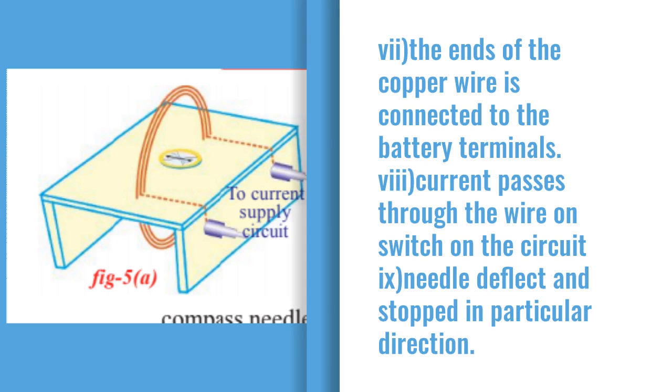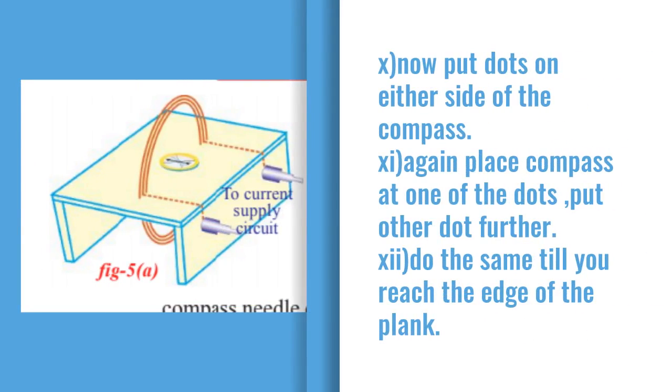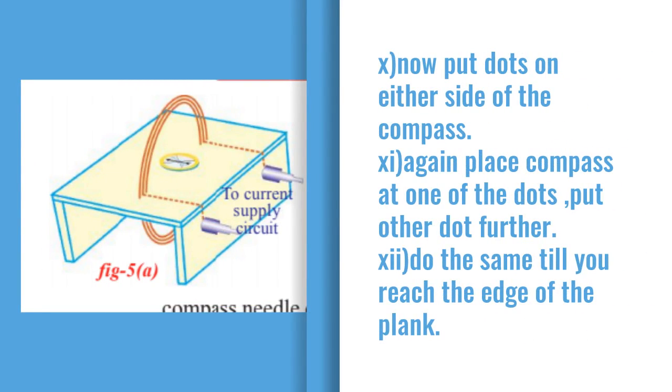When current is passing, we can observe that there will be a deflection in the compass needle. After deflection for some time, it will stop in a particular direction.